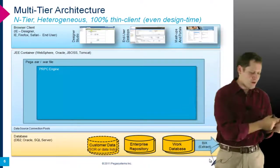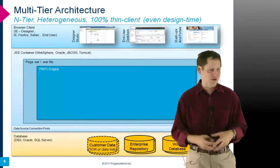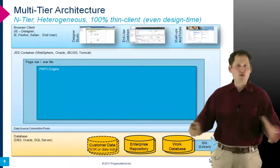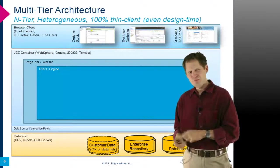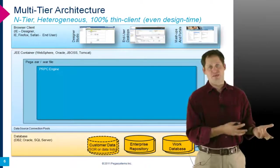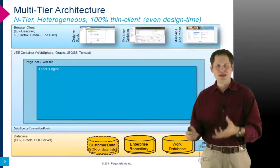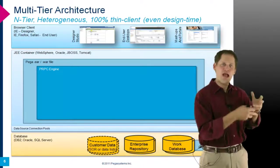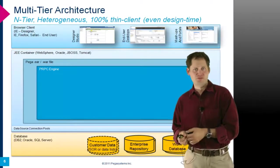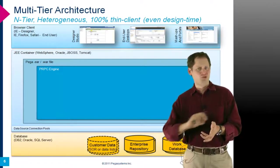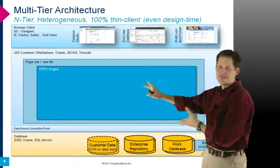Both the enterprise repository and the work database provide capabilities for federating — I can have a single repository or multiple repositories that share assets across a large enterprise. Also at the data layer are your own database applications that PEGA may access via JDBC as a data source. We also have a tool called BIX, the Business Intelligence Exchange, which allows rapid incremental or full extracts of any data in the PEGA database to push out to a data warehouse platform.